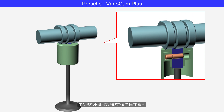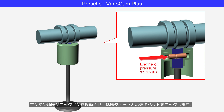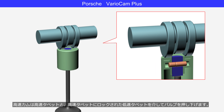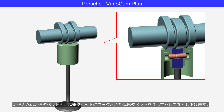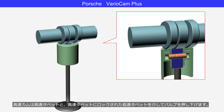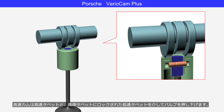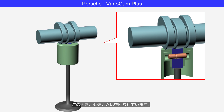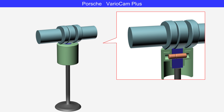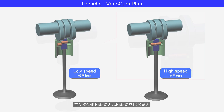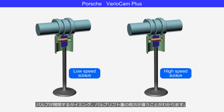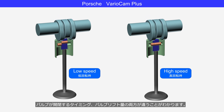When the engine speed reaches the specified value, the engine oil pressure moves the lock pin, locking the low-speed tappet and the high-speed tappet together. The high-speed cam pushes the valve down through the high-speed tappet and the low-speed tappet, which is locked to the high-speed tappet. At this time, the low-speed cams idle. Comparing low and high engine speeds, you can see that both the timing of valve opening and closing and the valve lift amount are different.